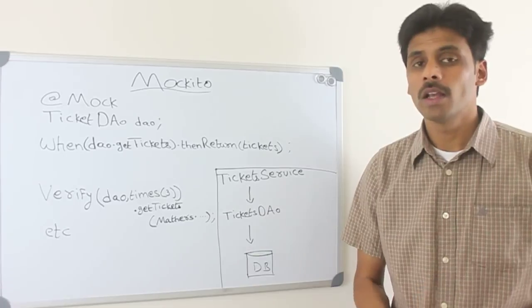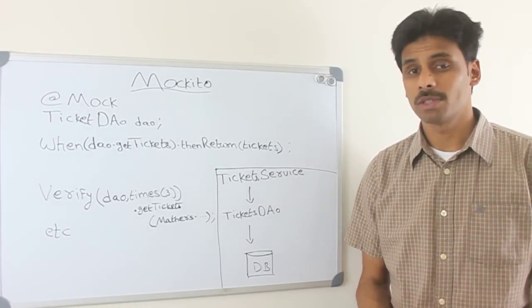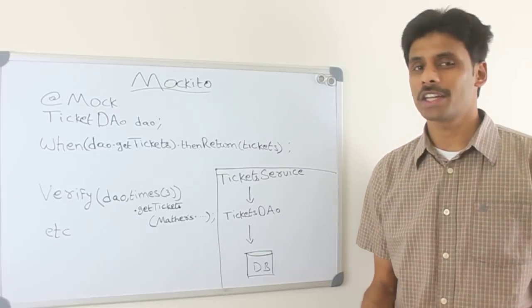To consider a better example, let's say we are building an online ticket reservation system. This could be movie ticket, rail ticket, air ticket, whatever.